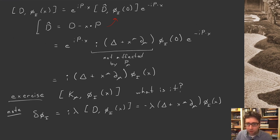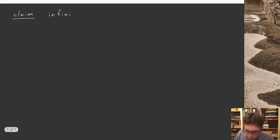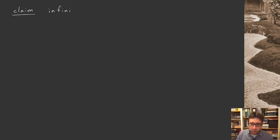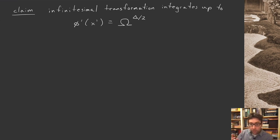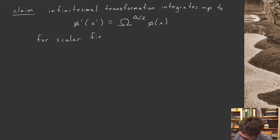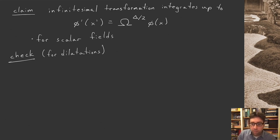We have the infinitesimal version, but we'd like the finite version. Rather than derive it directly, I'll give you the finite version and compute the infinitesimal one from it to check. The infinitesimal transformation integrates up to the following rule: the transformed field at the transformed location is this omega factor for the conformal transformation to the delta/2 power times phi at x. I'm giving this for scalar fields for now — I'll give the more general result at the end. Let's check it for dilatations: x' = (1+lambda) x, infinitesimally small lambda.